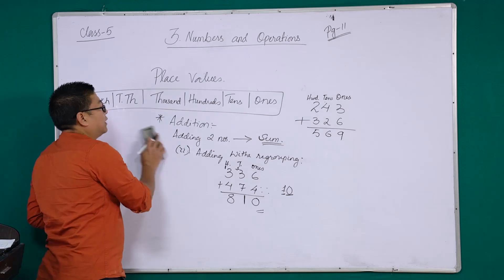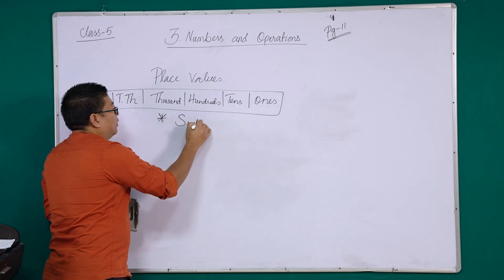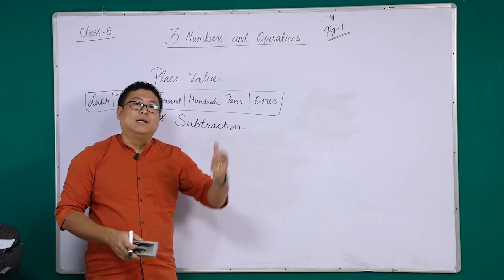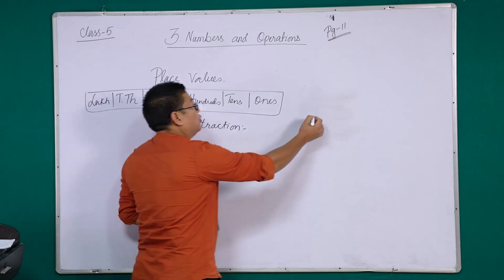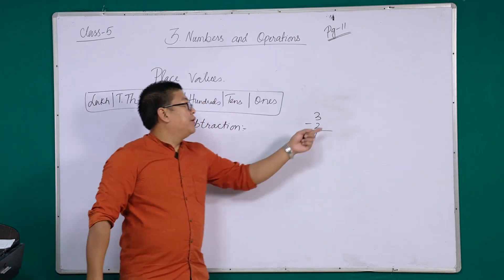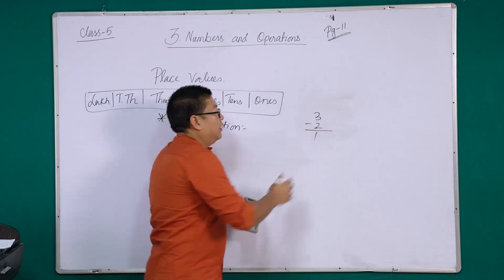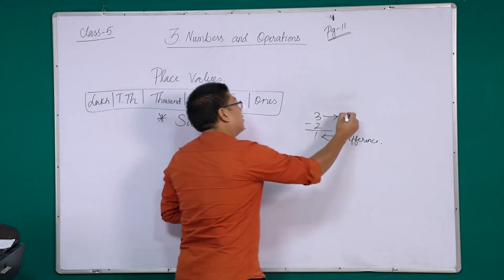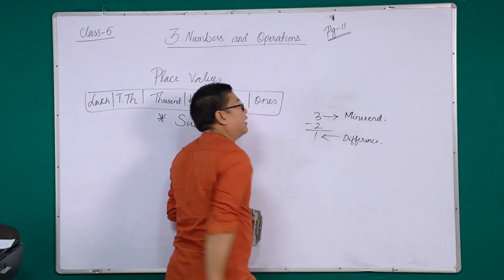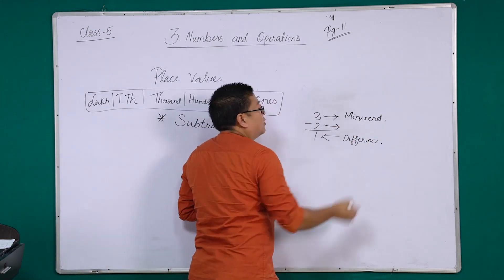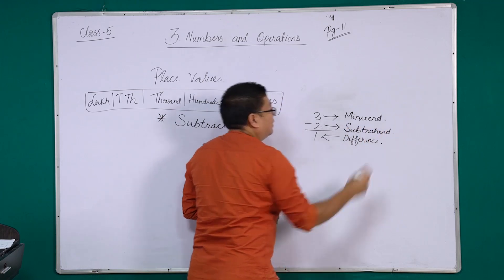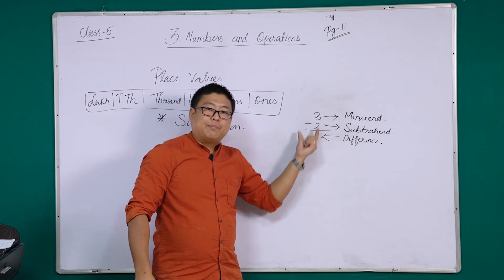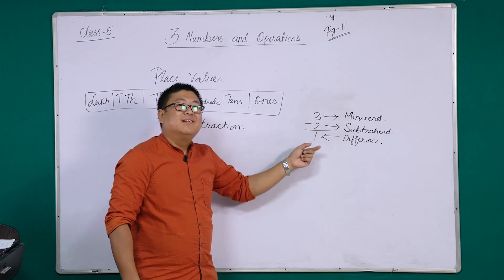Subtraction is also very similar. Subtraction is simply to subtract. When you subtract two numbers — for example, three minus two — you get an answer. That answer is called your difference. The bigger number on top is called your minuend. The smaller number below is called your subtrahend. The end result is called the difference. These are the different names given to the numbers when you subtract them.